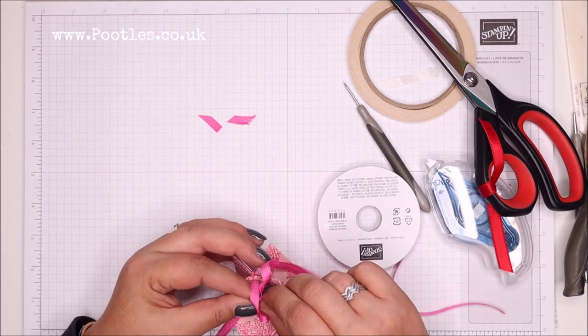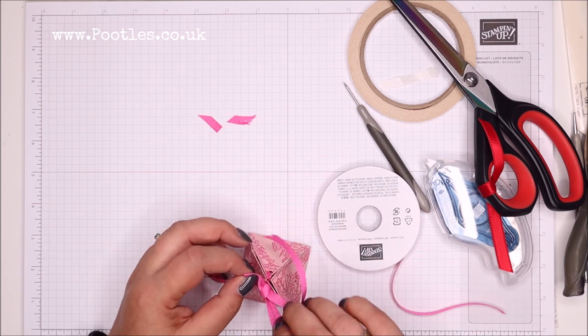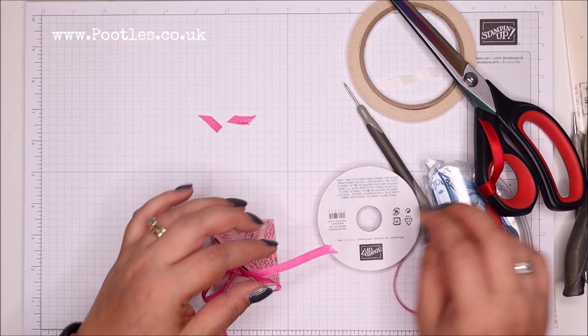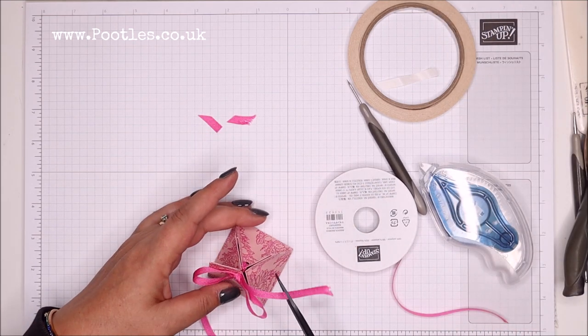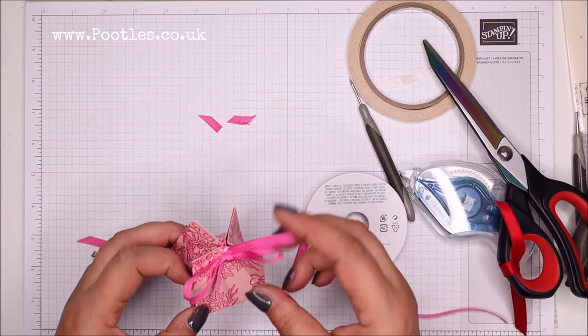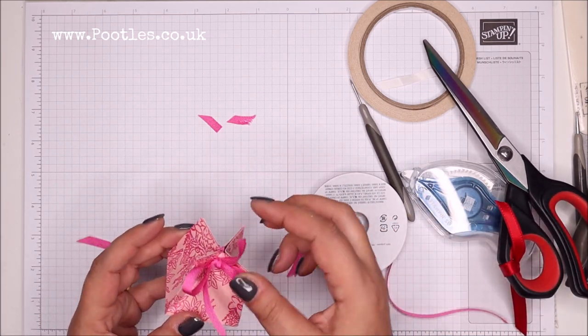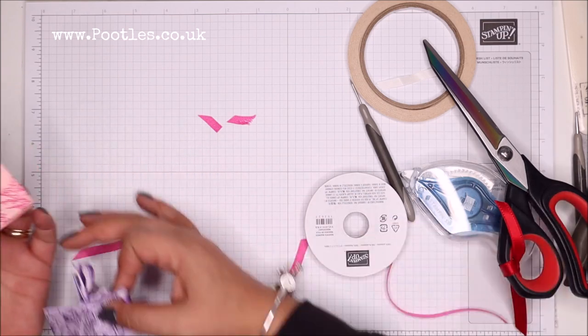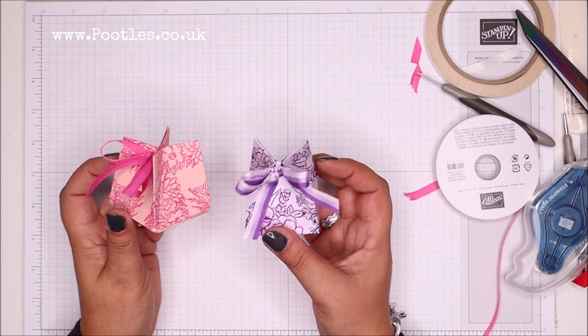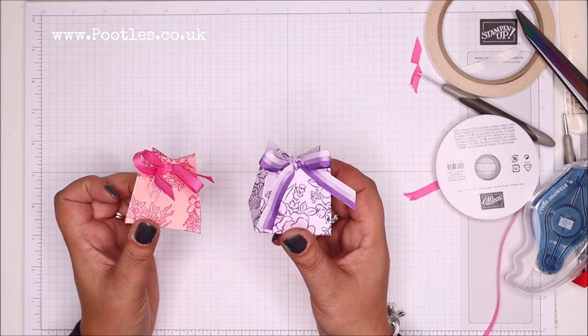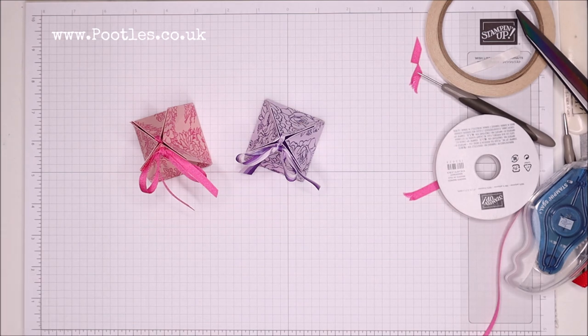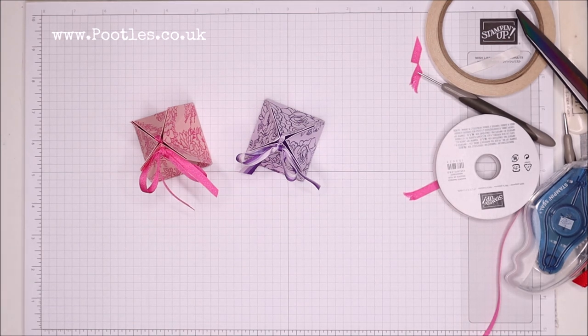And obviously, because I've done tone-on-tone stamping, and I've gone pinks here, and I did purples on my original, you really can do any colors you want. And if you're doing them as favors, match your theme. And I think they're lovely. I think they're so pretty. Very sweet. Very simple. They would hold quite a bit. If you're going to do them as wedding favors, five sugar and almonds would fit in there, no problem.